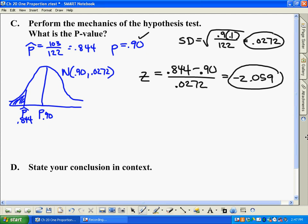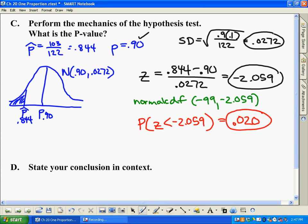Next up, we would always use a normal CDF now to find out what part of the curve that is. So normal CDF, and we do negative 99 comma negative 2.059. So we'd say the probability that z is less than negative 2.059. Now when you do this on the calculator normal CDF, I got 0.020.